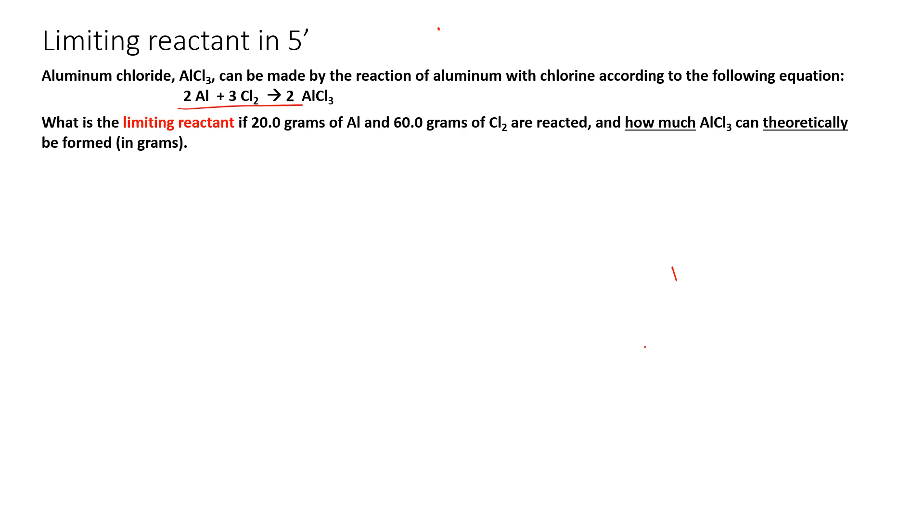So we have a balanced equation here. It must be balanced. You should check that. And we're told that we have 20 grams of aluminum and 60 grams of Cl2 to react. So I'm going to take a moment to rewrite this equation. This will pay off in the end.